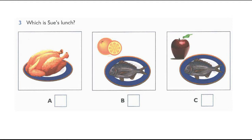3. Which is Sue's lunch? What are you having for lunch, Sue? Is it chicken? No, it's not. It's fish. And have you got an apple or an orange? An orange.